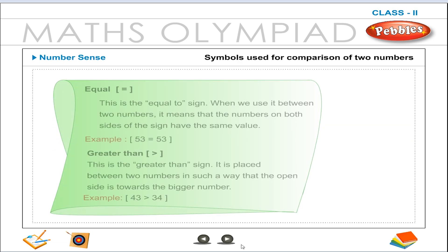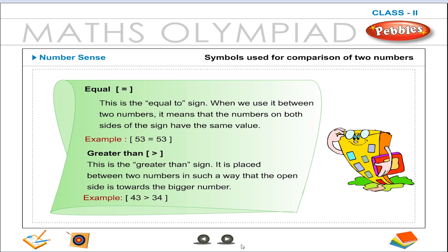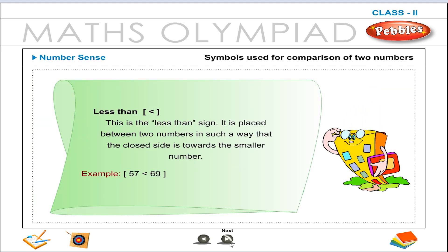Symbols used for comparison of two numbers. Equal to: This is the equal to sign. When used between two numbers, it means both sides have the same value. Example: 53 is equal to 53. Greater than: The open side is towards the bigger number. Example: 43 is greater than 34. Less than: The closed side is towards the smaller number. Example: 57 is less than 69.